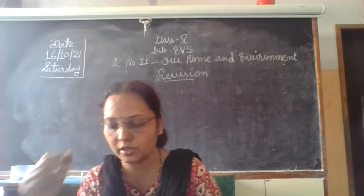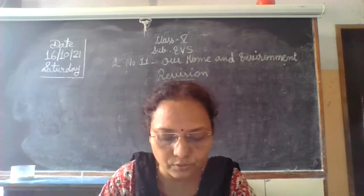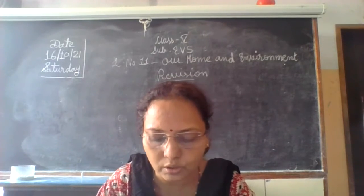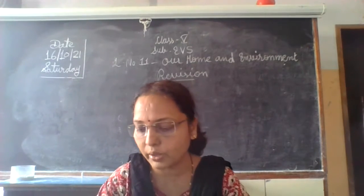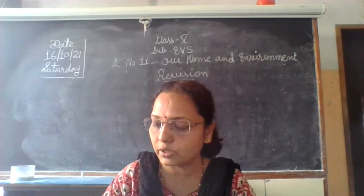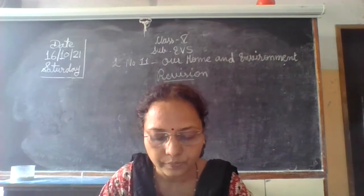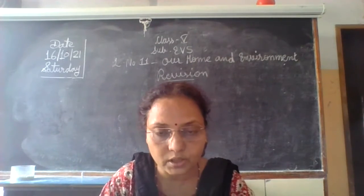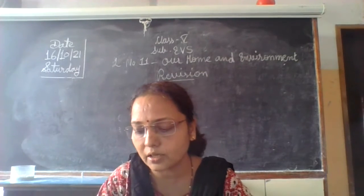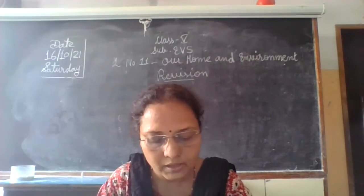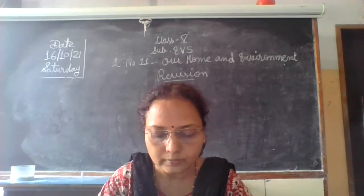Next question: arrange the following considerations from most to least important in house building. Options are A: luxury, B: structure, C: climate. First we consider climate, then structure, and then luxury.